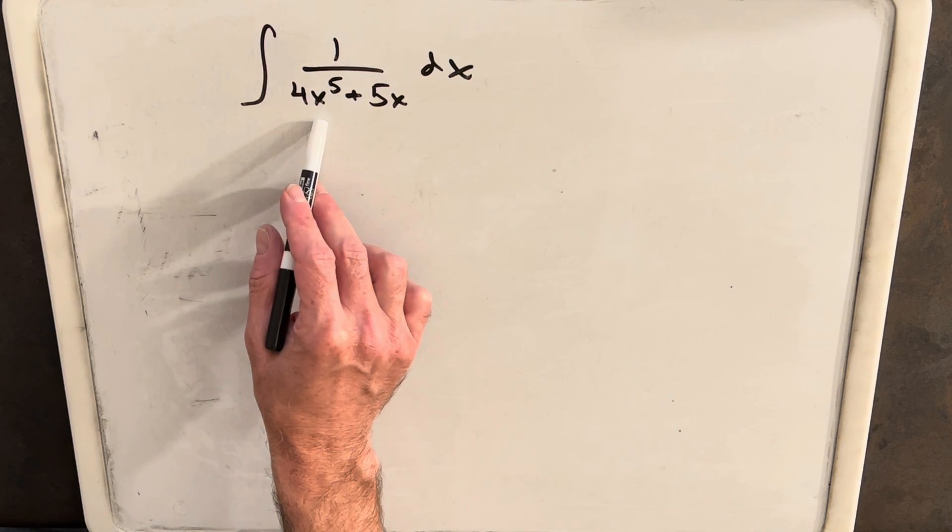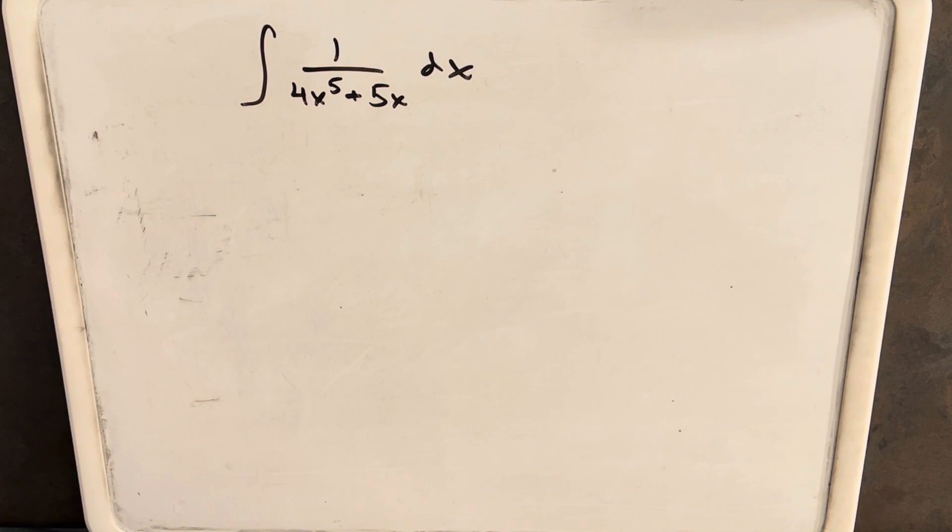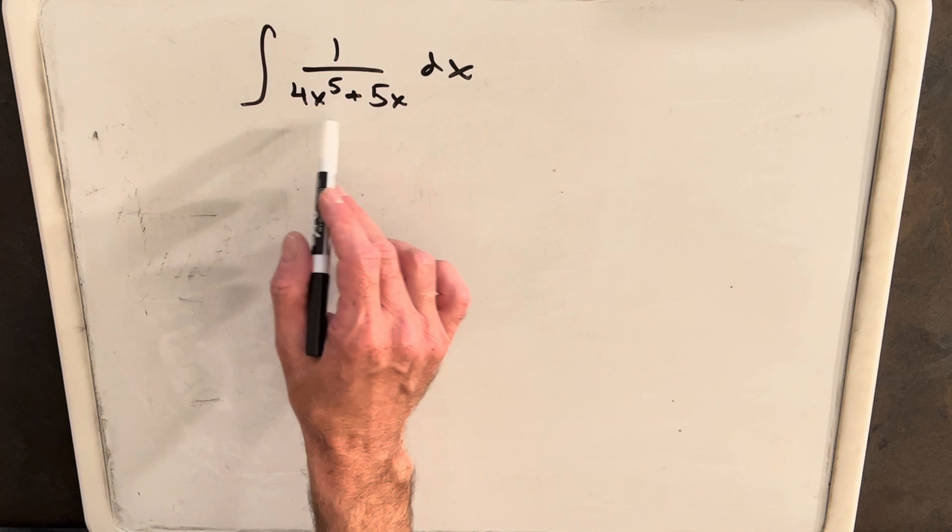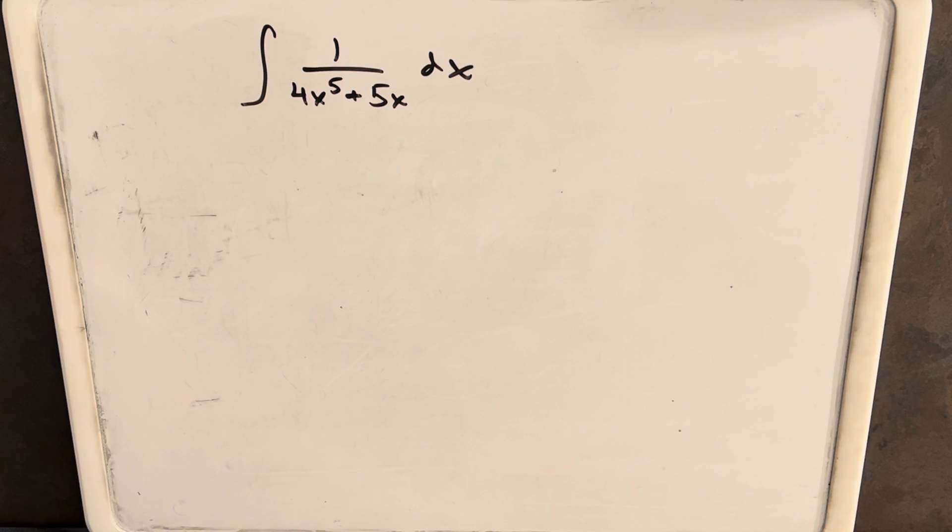I could factor out an x and we could do partial fractions, but then we have a quartic. And so the partial fractions is going to be probably really tedious. That would probably work, but I don't want to do that.